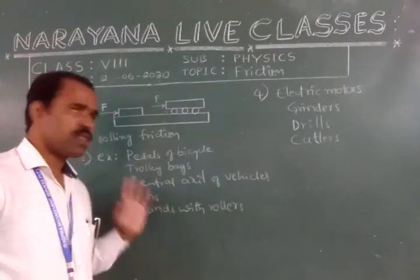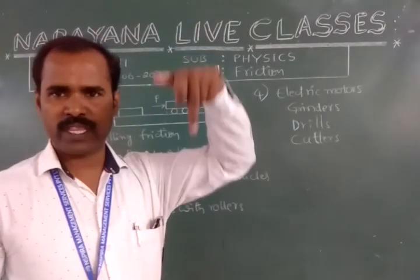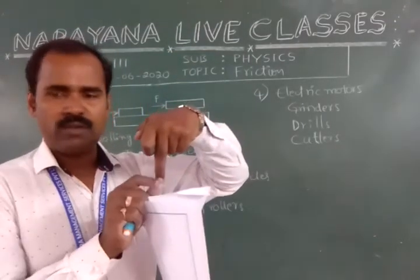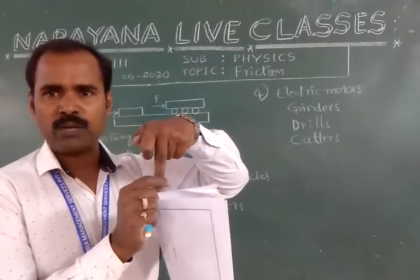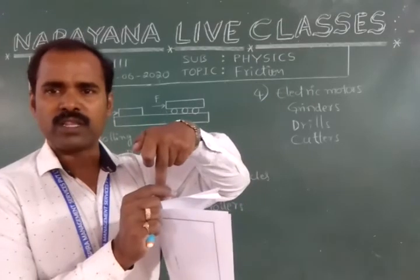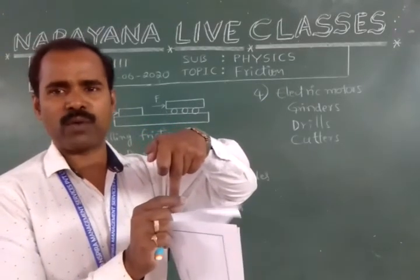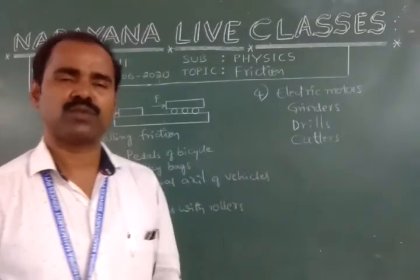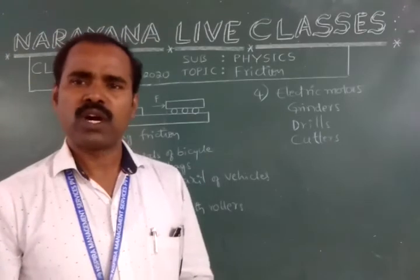Next one is fans. That fans central spindle will be there. With that it is fixed with a bearing. That ball bearings will be there. That provides the rolling friction. Instead of sliding it provides rolling friction. So these are the some examples in our day today where we are using rolling friction.